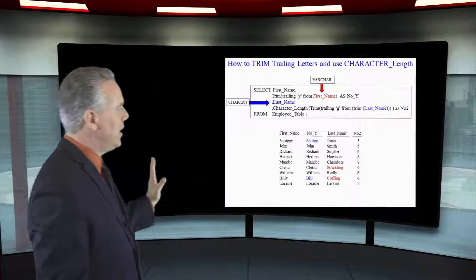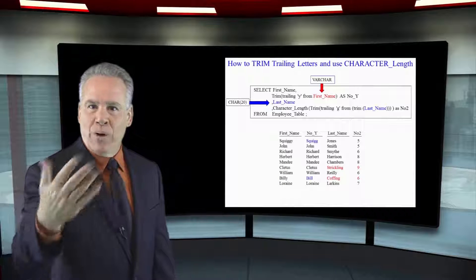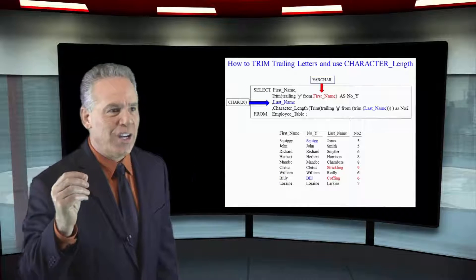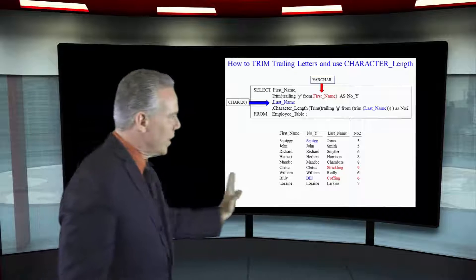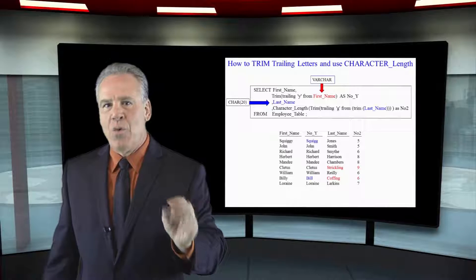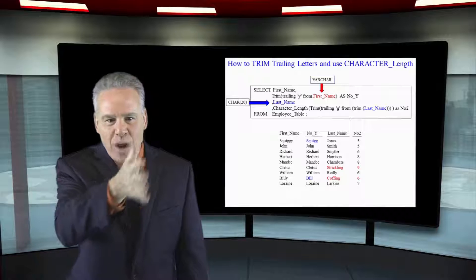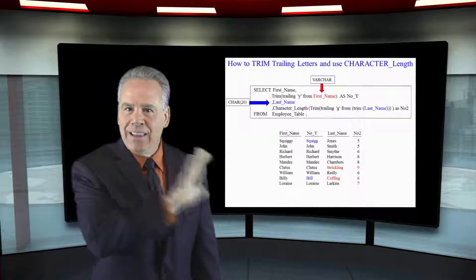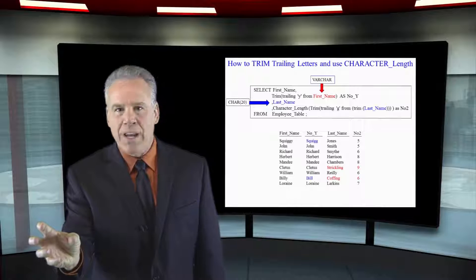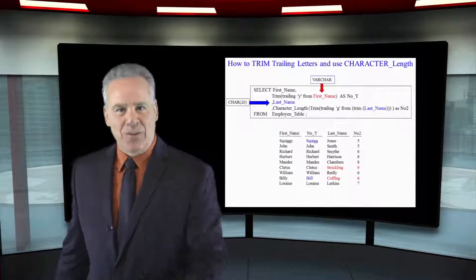As you can see, Strickling counted nine characters. There are really ten characters in Strickling, but we trimmed the trailing G. Same with Coffing — it's really seven characters long, but we trimmed the trailing G and got a character count of six. So when you see complicated SQL with trims, characters, trailing, and lengths, just start from the very right. Once you trim it, it passes and passes and passes — you'll be able to figure this out because you understand.